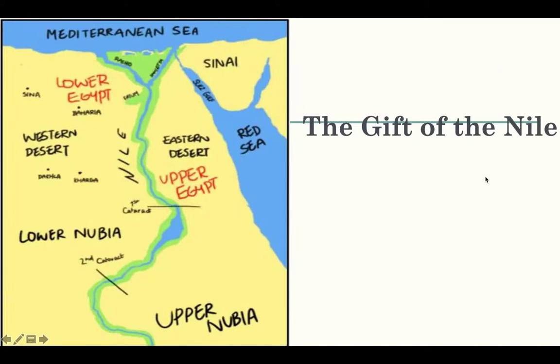The first section is on the gift of the Nile. The Nile River allowed Egypt to thrive — that's what allowed it to be so successful. It was the Nile River.